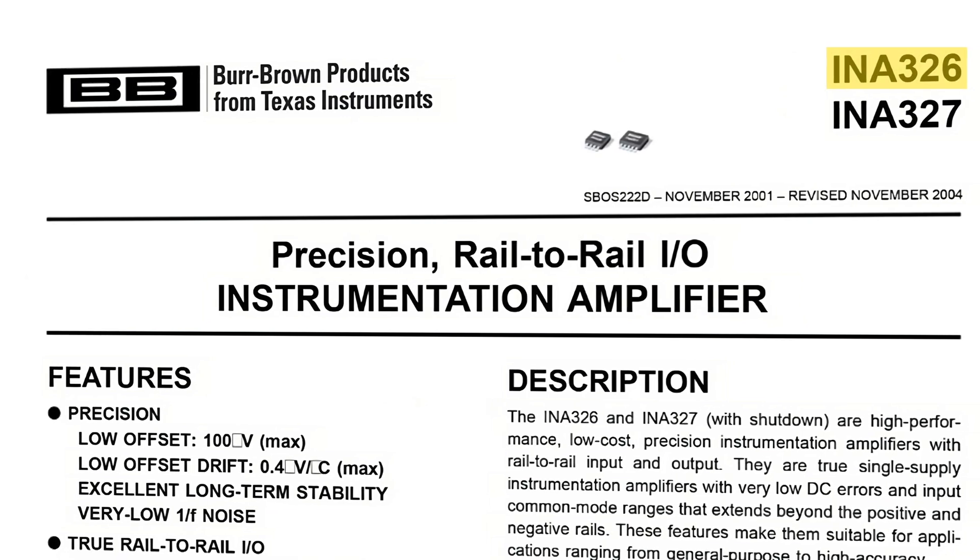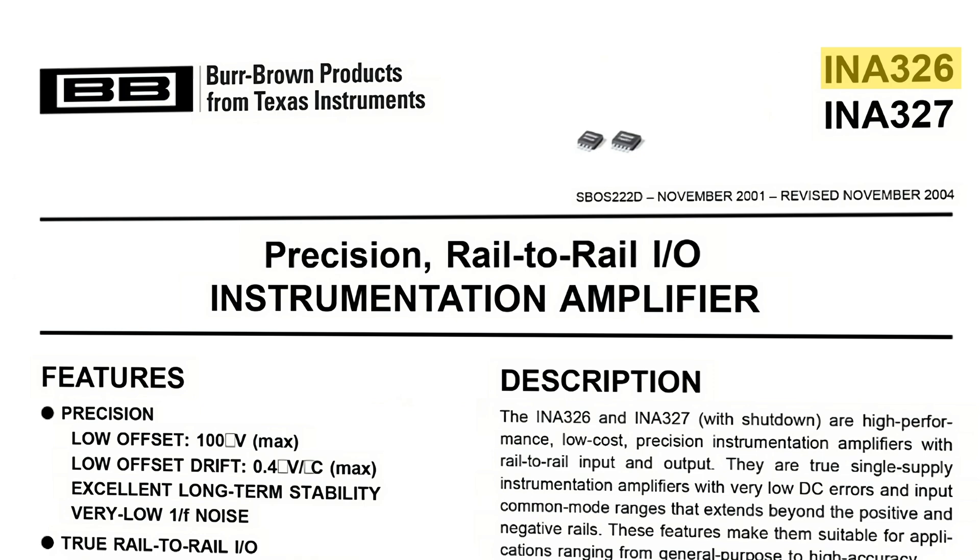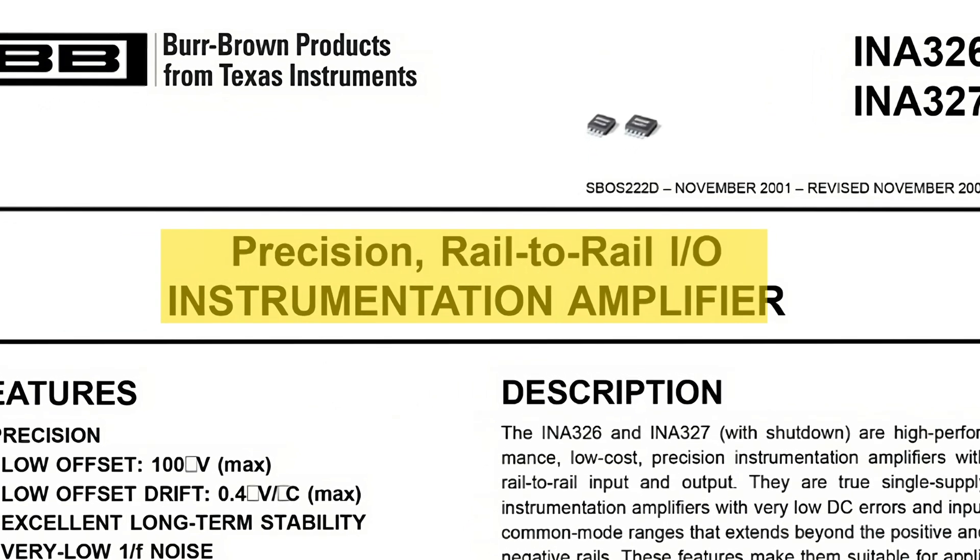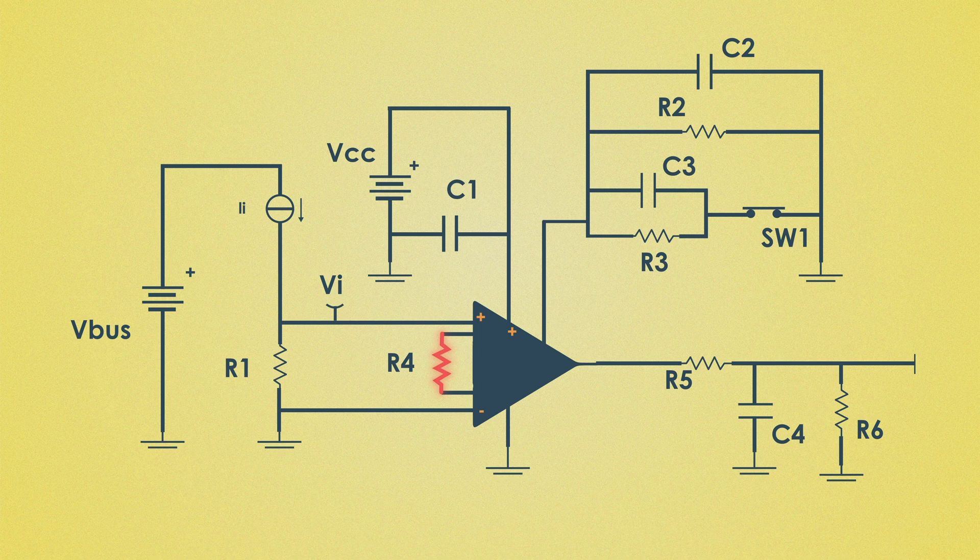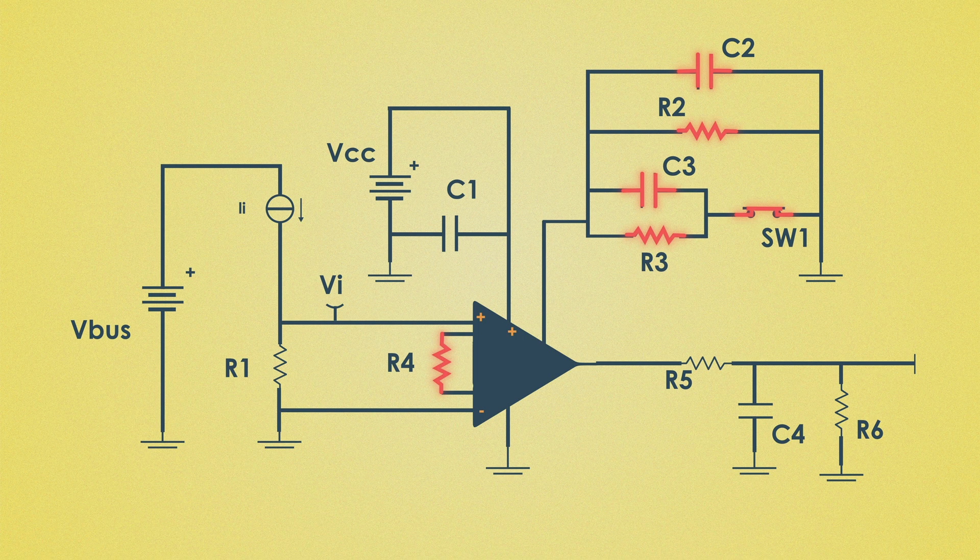Then the amplifier amplifies this small voltage drop across R1 to measure level while providing high accuracy and low noise. It is a precision instrumentation amplifier with rail-to-rail inputs and outputs, making it suitable for low current sensing circuits. The resistor R4 is part of the gain switching network for this instrumentation amplifier. The components R2, R3, C2, C3 and SW1 are part of the gain switching network.